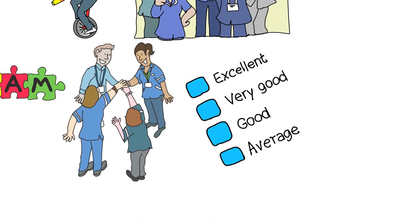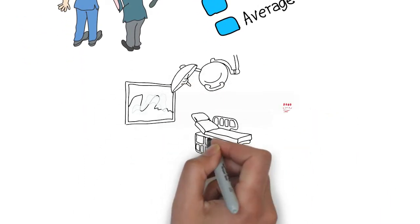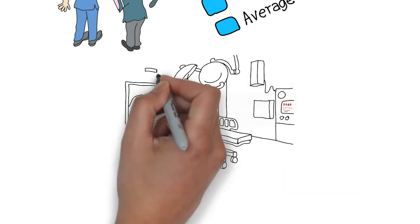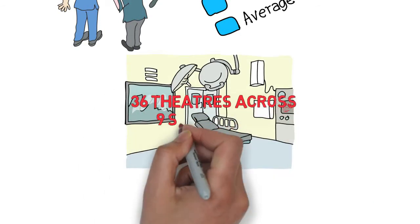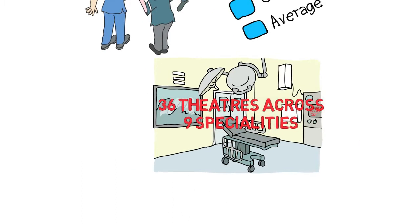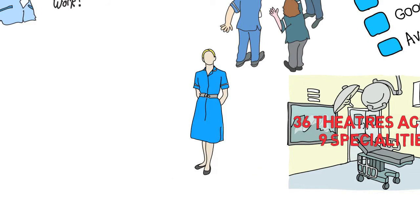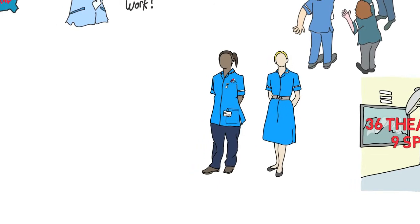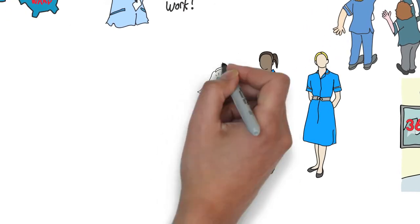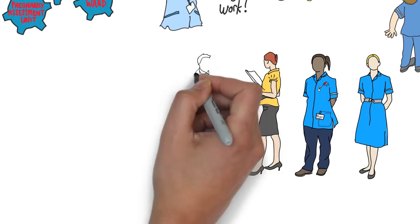Here at Royal Derby Hospital we have 36 theatres across nine specialties. Therefore, to support newly registered staff entering this specialist area, there is a professional development advisor and three professional development facilitators, who support the preceptors in the area and also work alongside the newly registered nurses and operating department practitioners, to develop the required knowledge and skills to become an independent scrub and or anaesthetic practitioner.